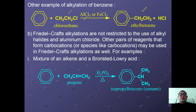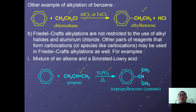Friedel-Crafts alkylation is not restricted to using alkyl halides — other reagents that can form carbocations may also be used. For example, an alkene catalyzed by a Brønsted-Lowry acid promotes carbocation formation. A secondary carbocation is more stable than a primary carbocation, so the carbocation forms at the more substituted position and substitutes the H out from the benzene ring to form isopropylbenzene (cumene).